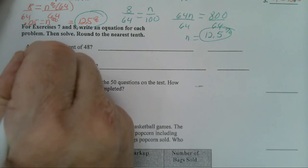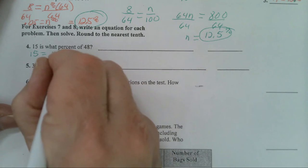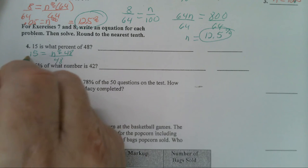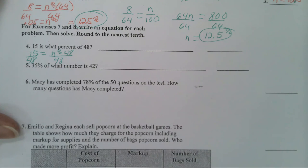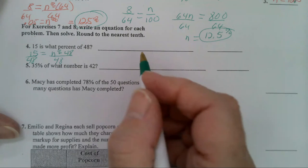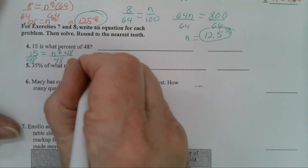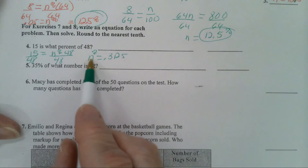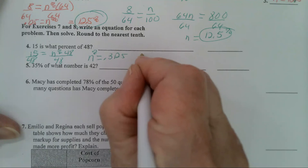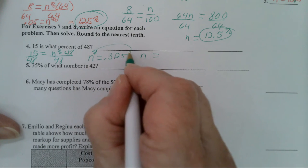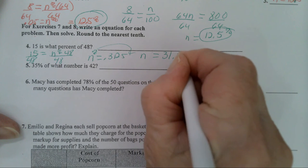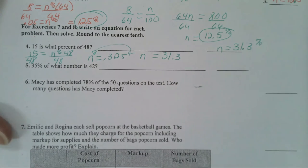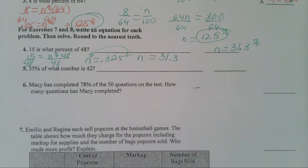15 is means equals N percent times 48. That's my equation. Divide both sides by 48. 15 divided by 48 equals 0.3125, so N equals 0.3125. That's N percent. So when I change this to a percent, you move it two places. N equals, to make the percent sign go on here, 31.3%. So the answer is 31.3%. When it wants a percent, change your decimal to a percent.